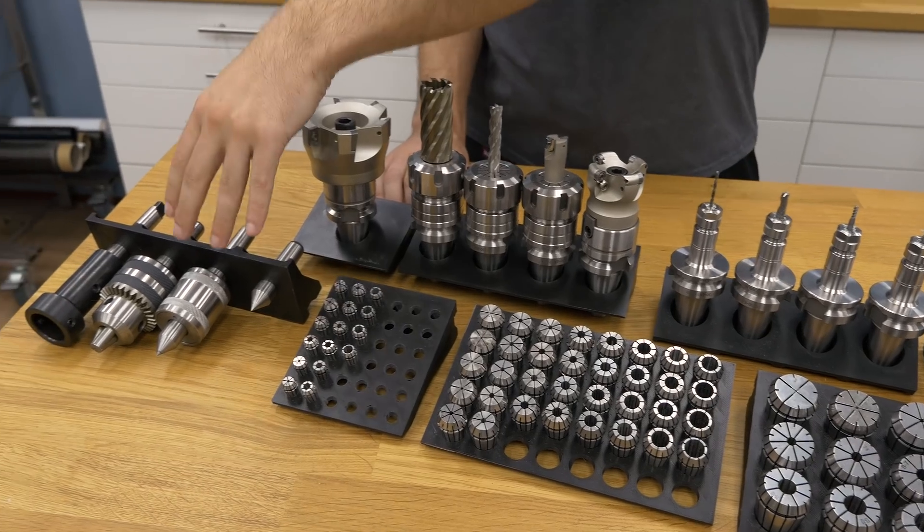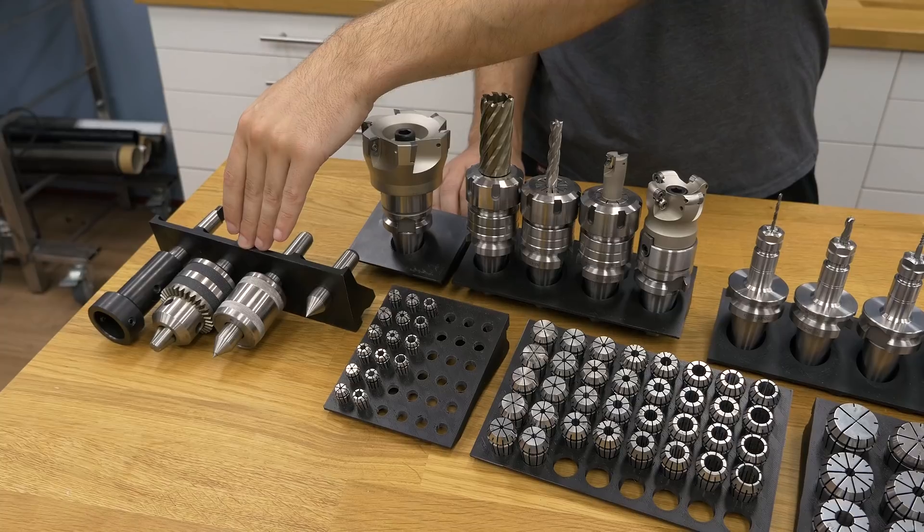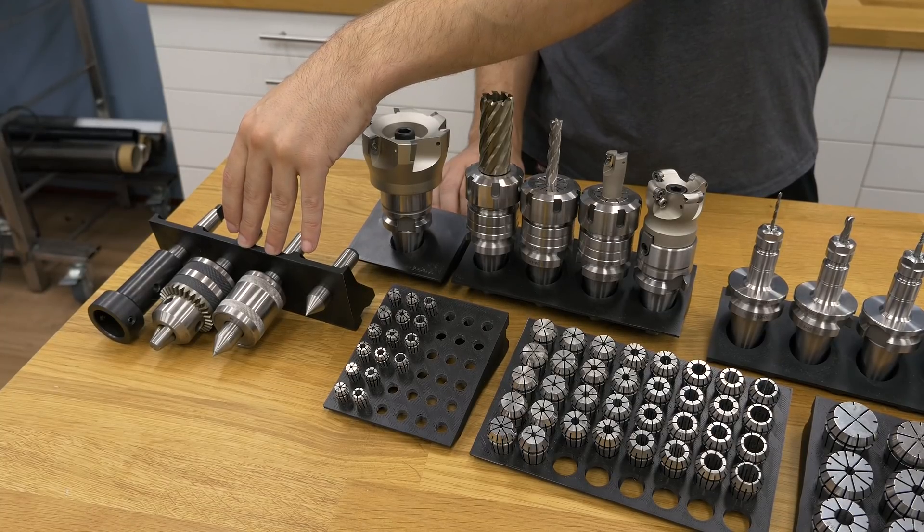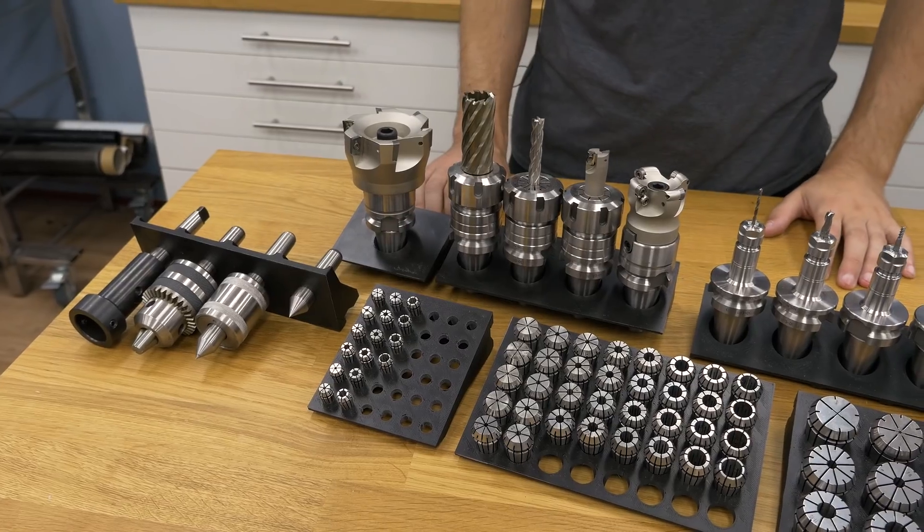And finally for the Morse Taper holders. In this case I made it for Morse Taper 2, MT2, but I also have models for size 1 and 3.